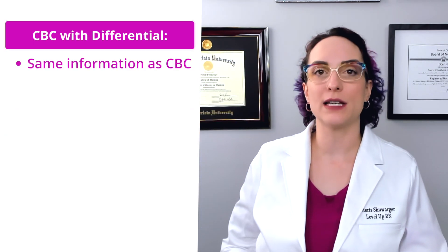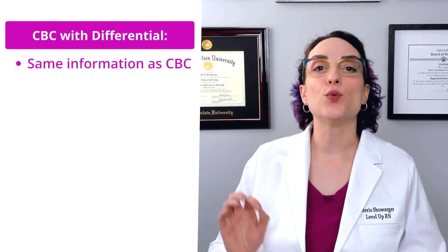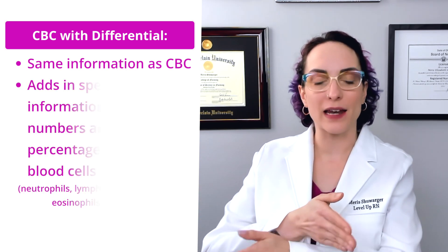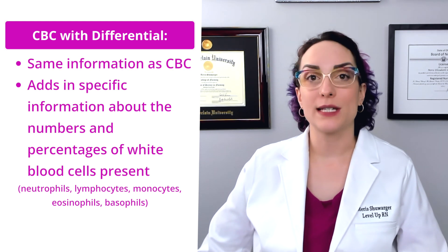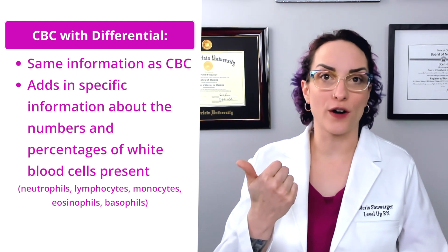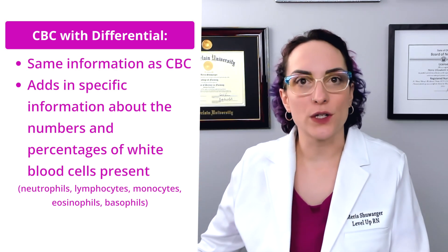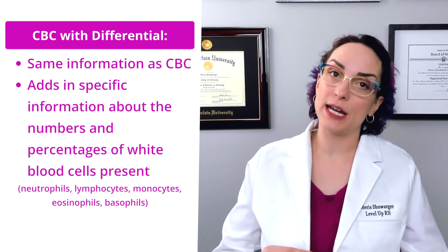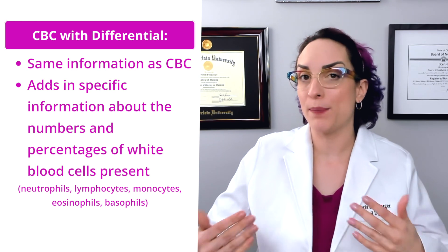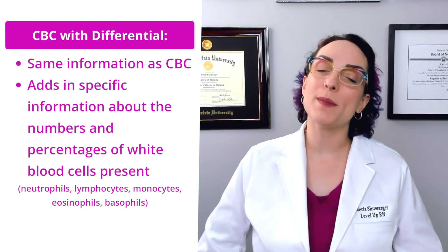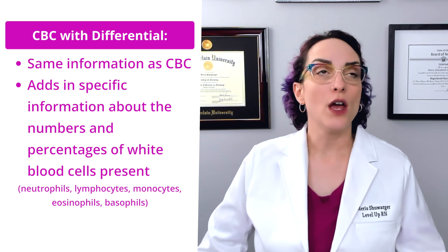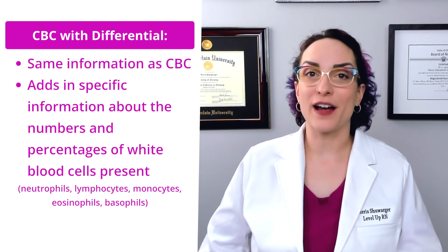If you ever see a panel called CBC with diff, or with differential, what this means is I want everything that's in the CBC, but I want you to take it one step further — I want you to differentiate. Tell me the difference between the white blood cells. Tell me how many neutrophils are in there, how many monocytes, how many leukocytes, how many basophils, how many eosinophils. I want to know how many of each particular type of white blood cell is in my patient's blood, because that will give me a lot of information about the type, source, and longevity of the infection they are experiencing.